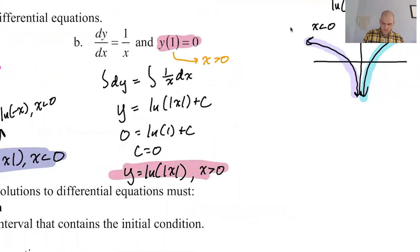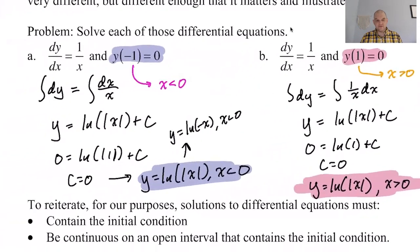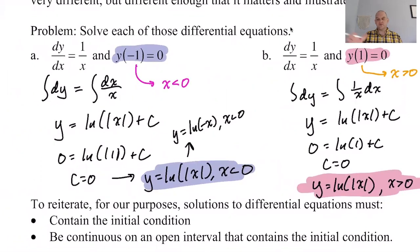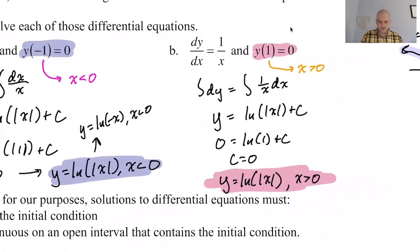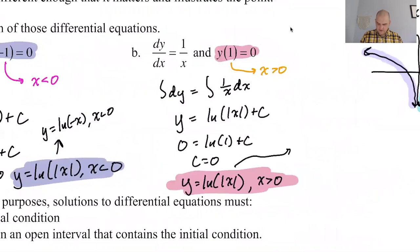This is something you need to think about: when the solution you're getting is not continuous — like ln|x| — you have to worry. For the general solution ln|x| + C, there's nothing we can do about the discontinuity without knowing an initial condition. You could break it down and say if x > 0 it's this, and if x < 0 it's this. But I would just leave it with the absolute value.